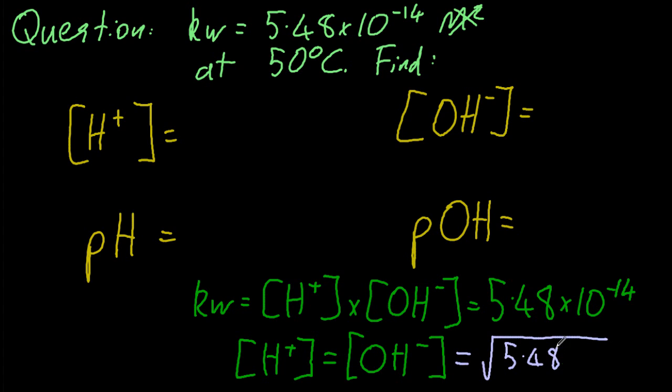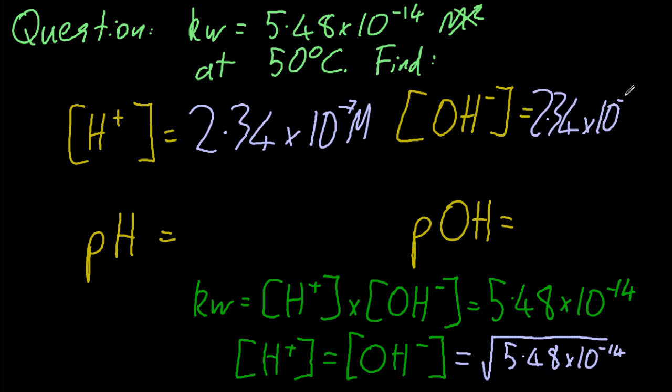And so by square rooting that value, I can get the concentration of hydrogen ions. And that's also going to be the same for hydroxide ions. They're both the same. It's neutral.